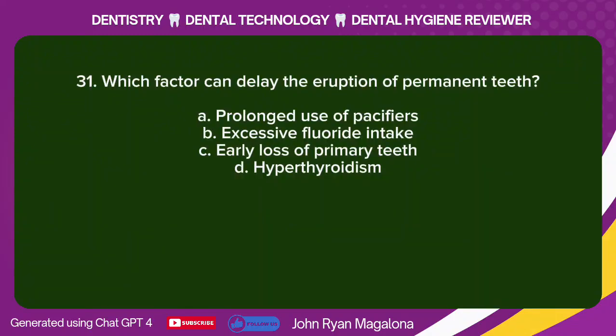Question 31: Which factor can delay the eruption of permanent teeth? A. Prolonged use of pacifiers. B. Excessive fluoride intake. C. Early loss of primary teeth. D. Hyperthyroidism. Answer: A. Prolonged use of pacifiers.